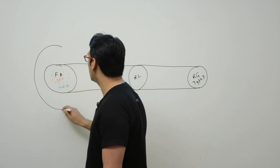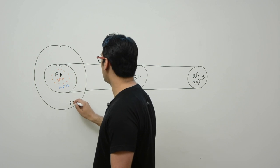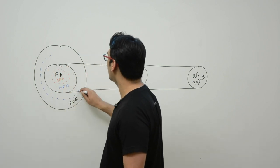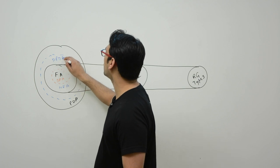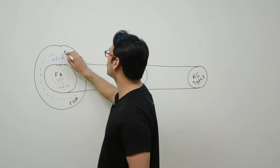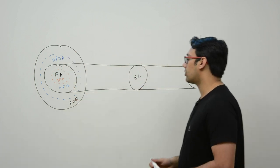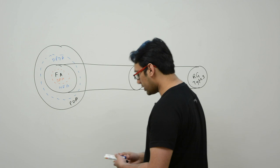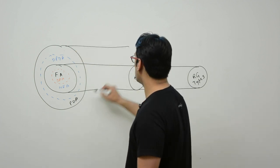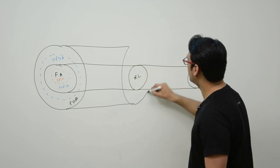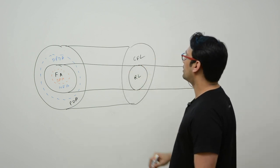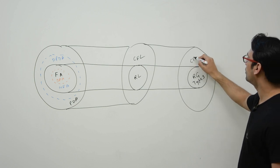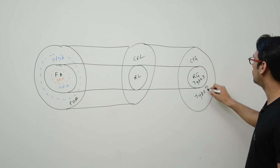Then we studied something called pushdown automata. Again, there are two types: number one is deterministic pushdown automata, and second one is non-deterministic pushdown automata — together called pushdown automata. Every non-deterministic pushdown automata is not a deterministic pushdown automata. The languages accepted by pushdown automata are called context-free languages, and the grammars which generate context-free languages are called context-free grammars, or type 2 grammars.